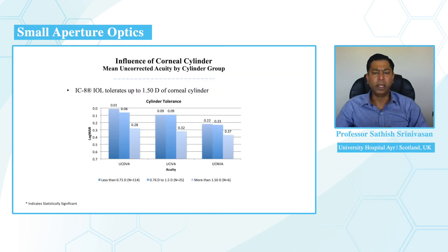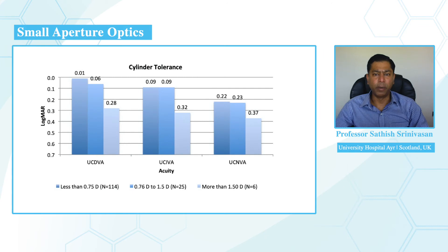This slide shows the influence of refractive error on visual acuities, demonstrating that the IC8 IOL can tolerate up to one diopter of deviation from the refractive target without compromising uncorrected distance, uncorrected intermediate, and uncorrected near vision.